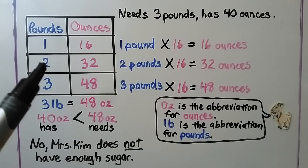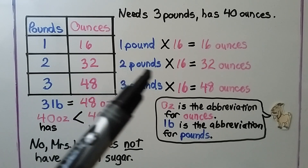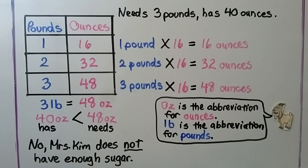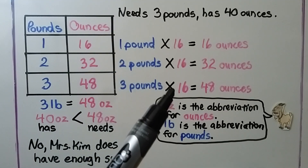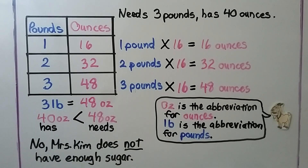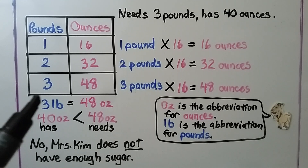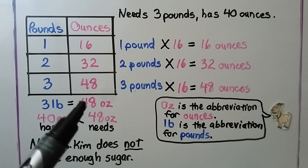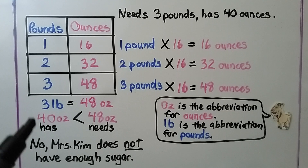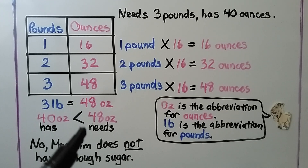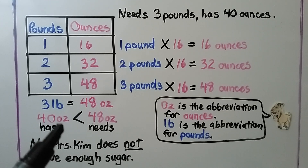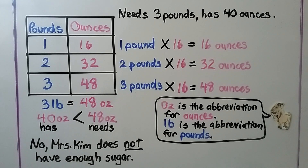Two pounds would be 2 × 16 = 32 ounces. Three pounds would be 3 × 16 = 48 ounces. She has 40 ounces but needs 48 ounces. Since 40 is less than 48, no — Mrs. Kim does not have enough sugar to make the cookies.